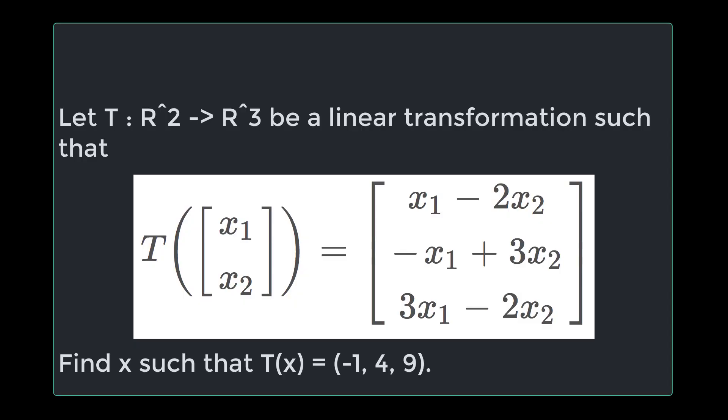The question we're working on today is: let T from R² to R³ be a linear transformation such that T of X₁X₂ equals X₁ minus 2X₂, minus X₁ plus 3X₂, 3X₁ minus 2X₂. Find a vector X such that T of X equals minus 1, 4, 9.